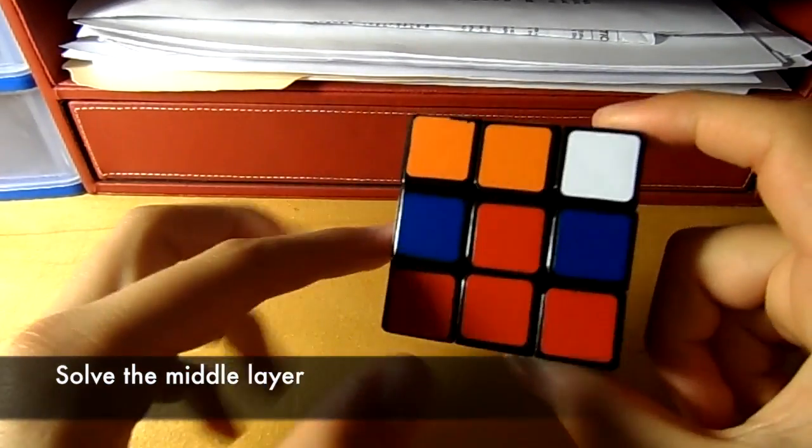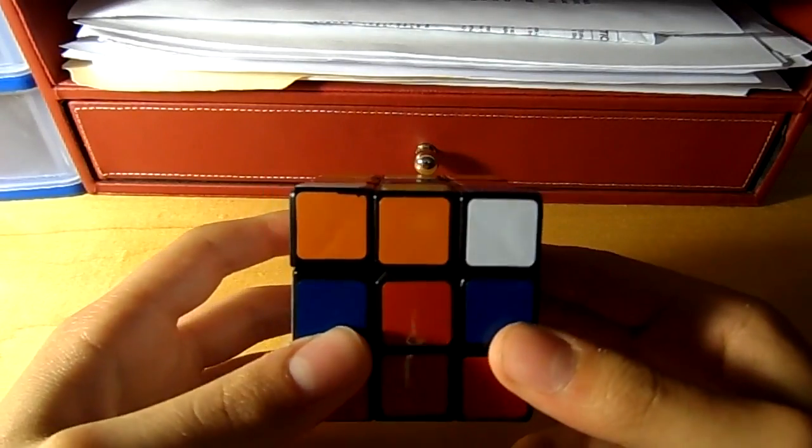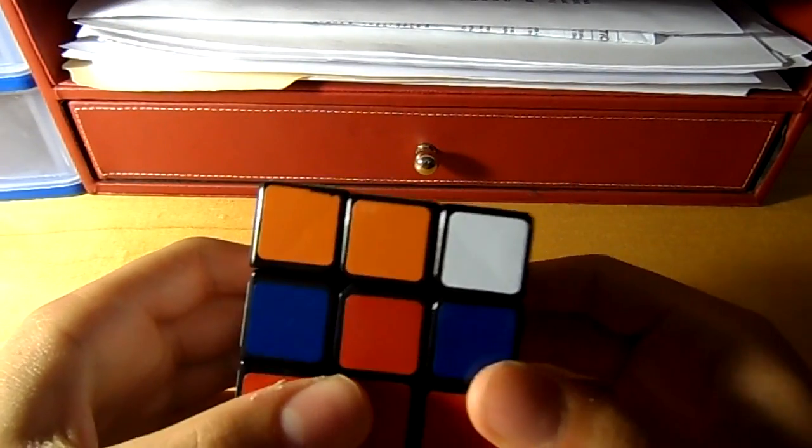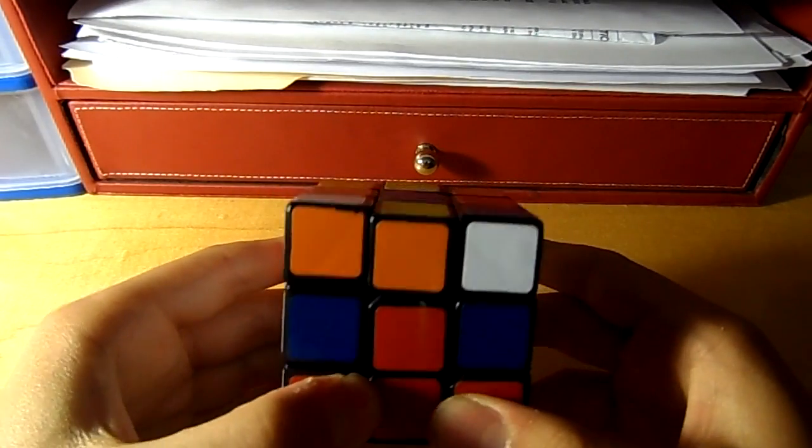So solving this middle layer is actually quite easy because there's only two different algorithms that you have to memorize, and quite honestly they aren't that bad. They're only about eight moves long each and they are relatively similar.